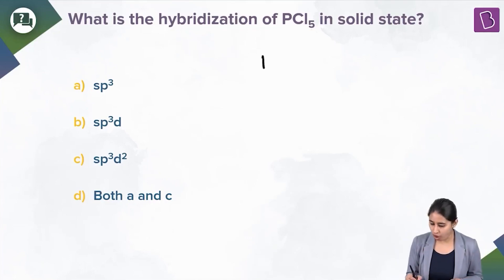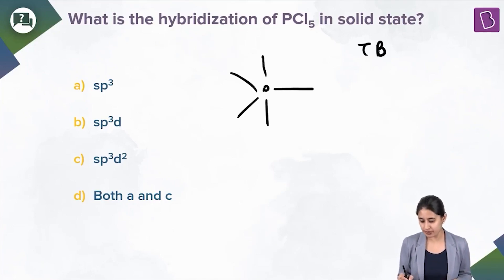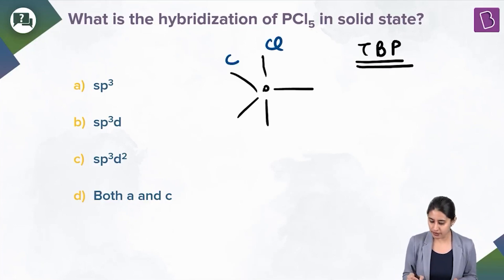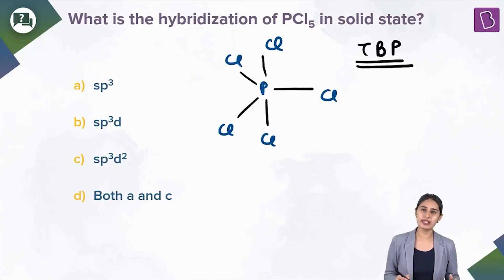PCL5, normally, nothing mentioned, then we know is TBP, trigonal bipyramidal geometry. Side atoms are 5, central atom is phosphorus. Axial equatorial breaks into PCL3 plus CL2. The CL2 is coming from axial.